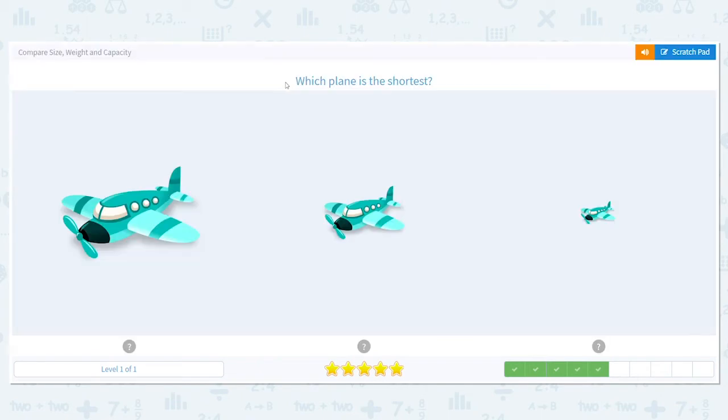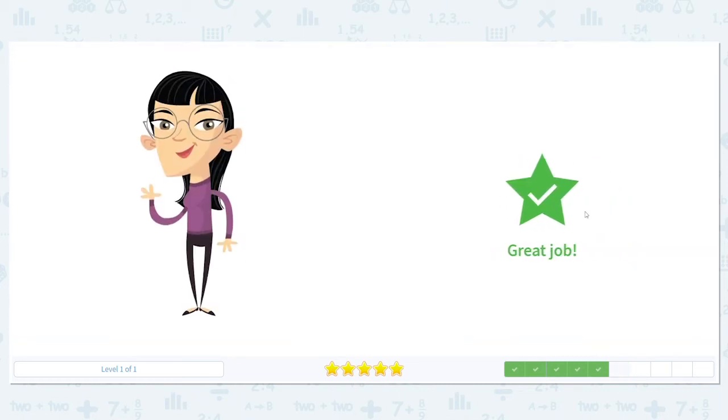Which plane is the shortest? Again, let's think about Mama, Papa, and Baby Bear. Papa gets the biggest, Mama's in the middle, Baby gets the shortest. Because the baby is the smallest bear in the family. So, that means this little plane would be for him.